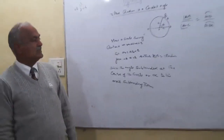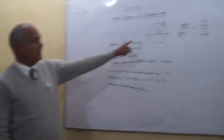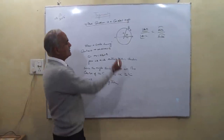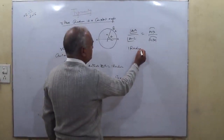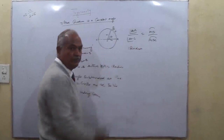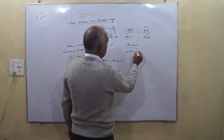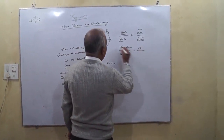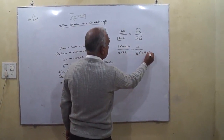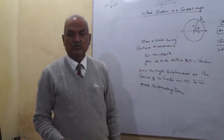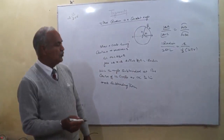Angle AOB is one radian, and angle AOC is two right angles because it is a straight line angle. So we have: one radian upon two right angles is equal to R upon half circumference. The circumference of the circle is two pi R, so half circumference is pi R.